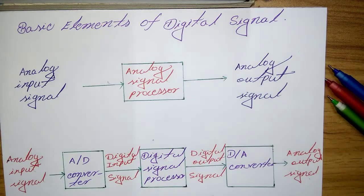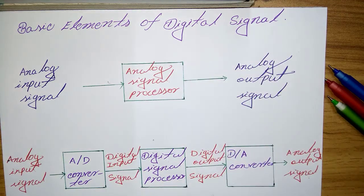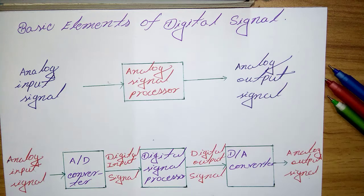In this tutorial, I discuss the basic elements of digital signal. Most signals encountered in science and engineering are analog in nature — that is, signals that are functions of a continuous variable such as time or space, and usually take on values in a continuous range.